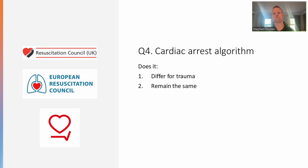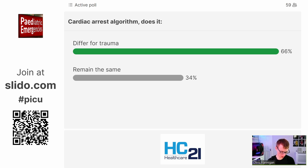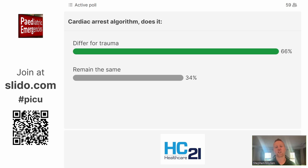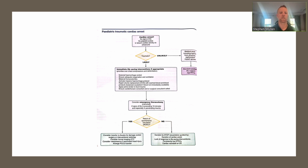The next question: for cardiac arrest, does the resuscitation algorithm differ for trauma? It's fairly clearly different — about 60% to 40% in favour of it being different. This is based on a Delphi study from Vassalo et al., who consulted emergency practitioners, anaesthetists, and ICU consultants to decide how best to resuscitate these children. They came up with a care-giving bundle of life-saving interventions.